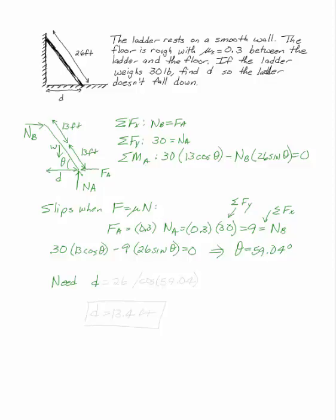I was asked to find d so it didn't fall down. Impending motion happens when d is equal to 26 over cosine of 59.04. So as long as d is less than 13.4 feet, the ladder will not fall over.